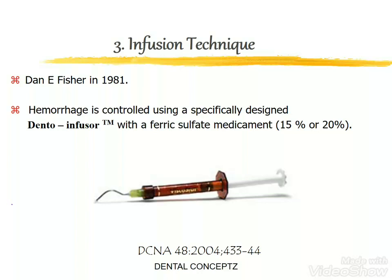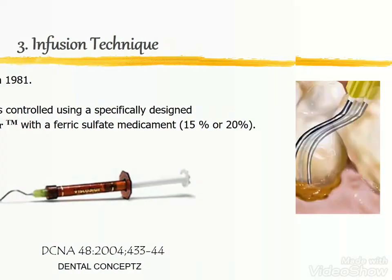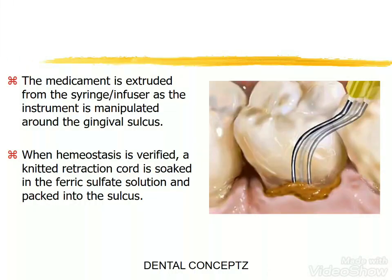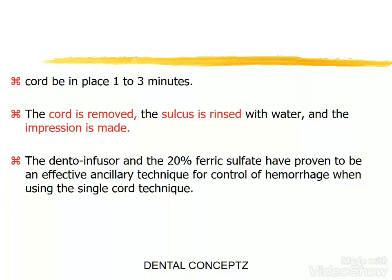The infusion technique was given by Danny Fisher in 1981. Hemorrhage is controlled using a specifically designed dental infusion with a ferric sulfate medicament. The medicament is expressed from the syringe as the instrument is manipulated around the gingival retraction area. When hemostasis is verified, a knitted retraction cord soaked in deep ferric sulfate solution is packed into the sulcus. The cord remains in place for one to three minutes, then is removed and the sulcus is rinsed with water before the impression is made. The 20% ferric sulfate infusion has proven to be an effective ancillary technique for control of hemorrhage when using the single cord technique.